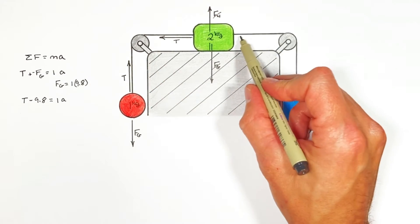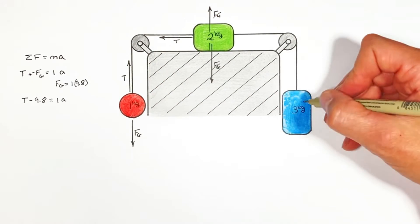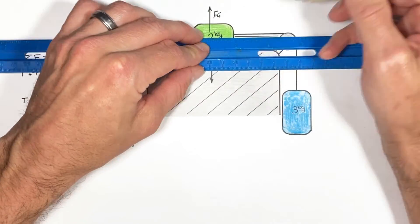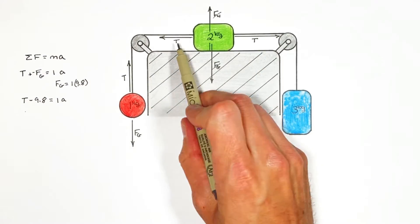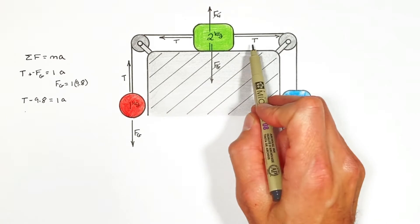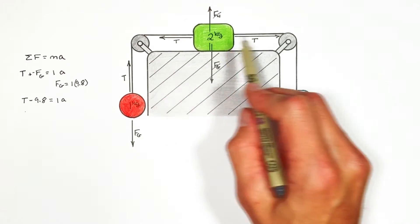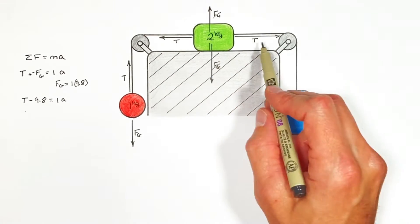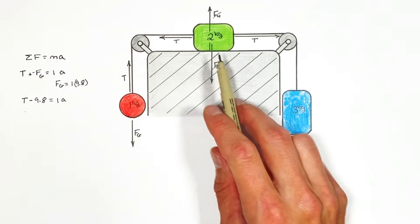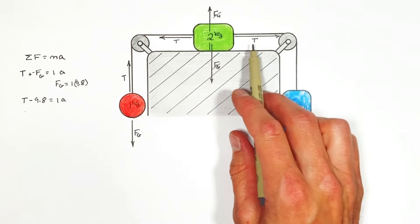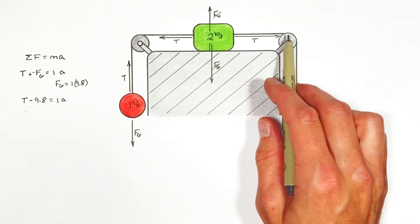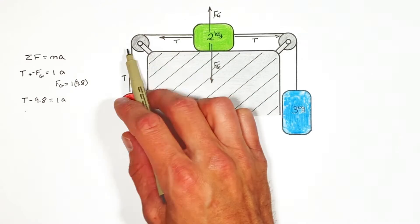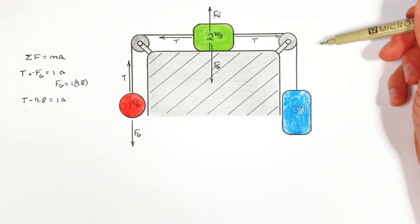Now there's another tension over here from this string which is supporting this three kilogram block. But the issue here is these two tensions aren't the same. We have two different strings and they have to have different tensions in them. Let me explain why. If the tension on the right or pulling the block to the right was the same as the tension pulling the block to the left this block wouldn't go anywhere.